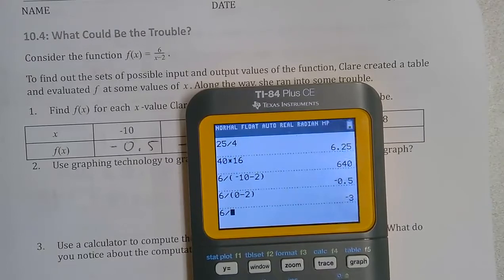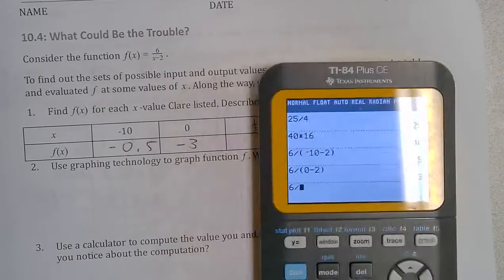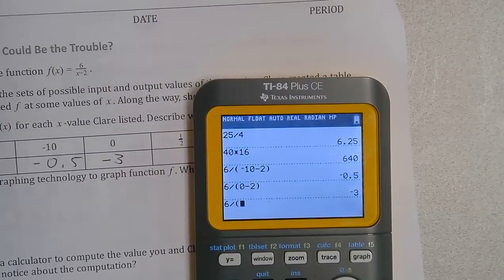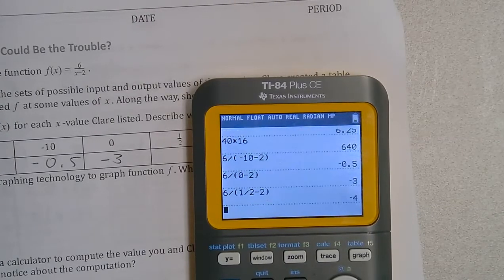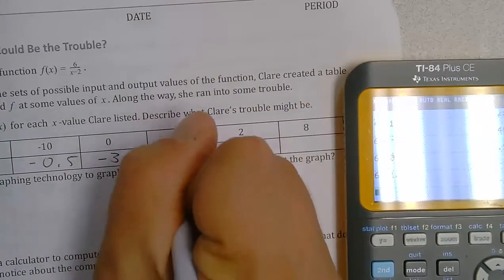So now 6 divided by 1 half minus 2. And that would give us negative 4.